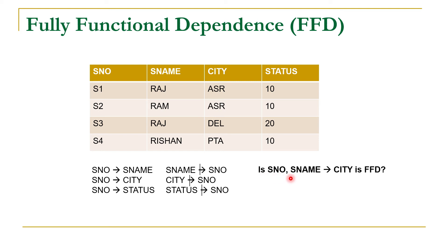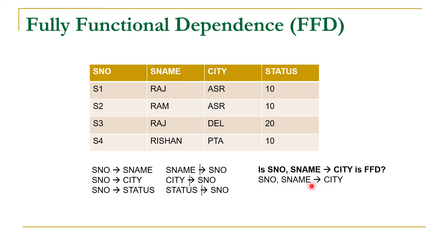Now let us answer this question: is the combination of S number and S name fully functionally determining city or not? In order to check this, the first condition is that Y should be functionally dependent on X. So first of all we have to check that city should be functionally dependent on the combination of S number and S name.